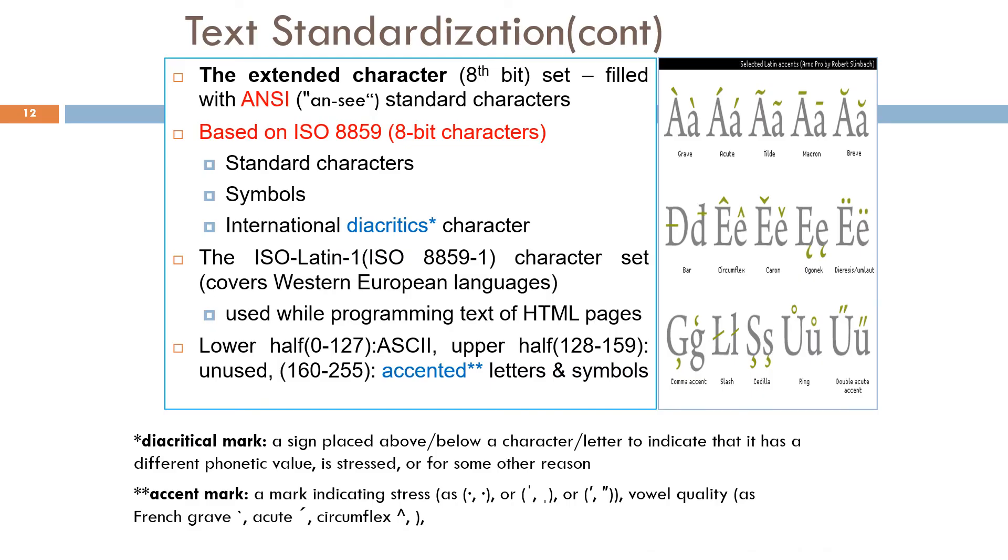The American National Standards Institute's, or ANSI format, is a Microsoft-related standard for character set encoding and a modification of the ASCII character set. ANSI format is a doubled modification of former ASCII. According to information processing standard ISO 8859, 8-bit single byte coded graphics character set includes standard characters, symbols, and international diacritics character. ISO 8859-1 covers Western European languages. This encoding is normally used while programming text of HTML pages.